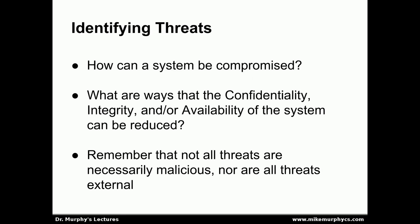In identifying a threat, we want to ask ourselves how a system could be compromised — what are ways that the confidentiality, integrity, or availability of the system could be reduced? Remember that not all threats are necessarily malicious, and not all are necessarily external. It's possible to have an internal threat: a malicious internal threat such as a corrupt employee, or an accidental internal threat such as a problem with a circuit breaker. There are all kinds of different types of threats to be considered.